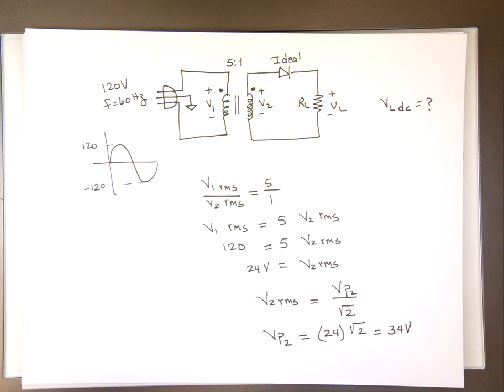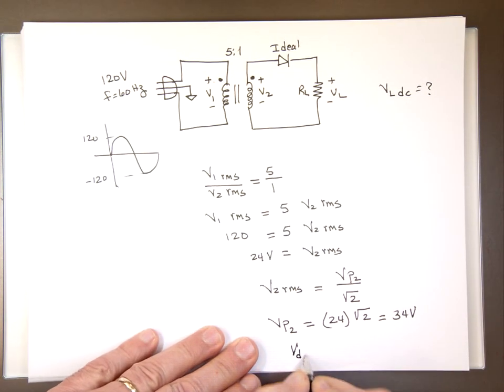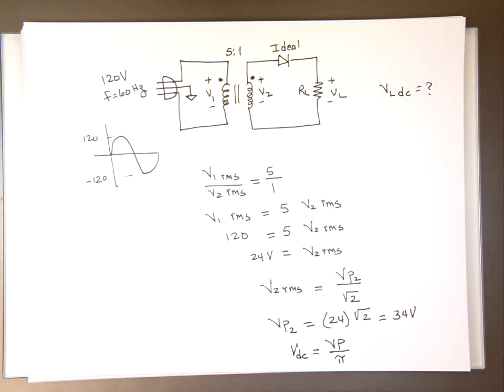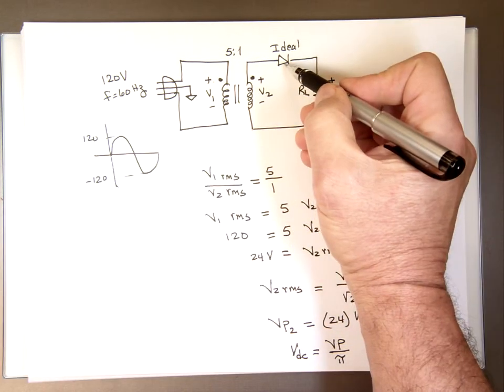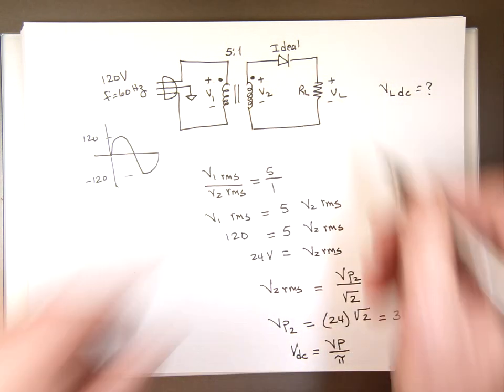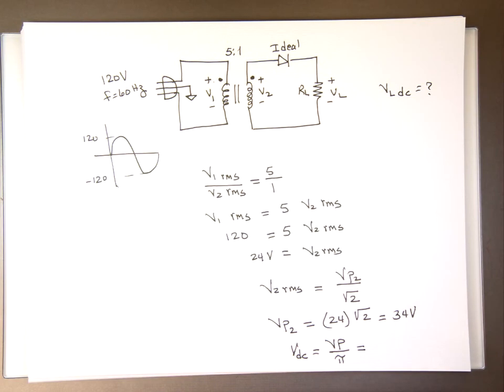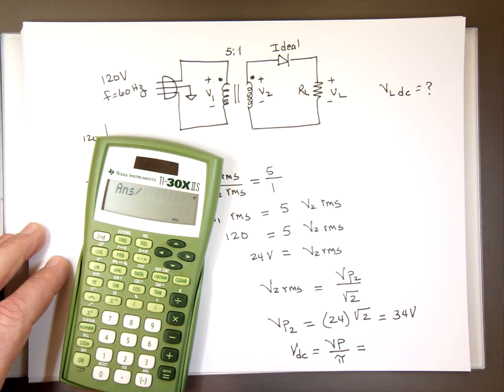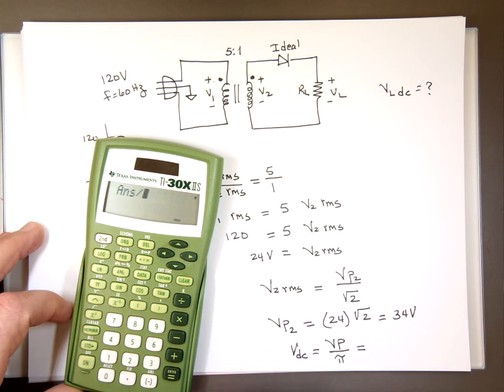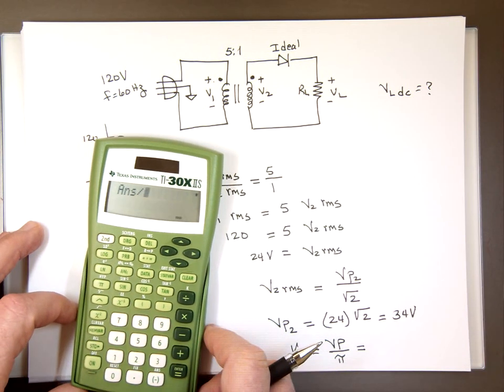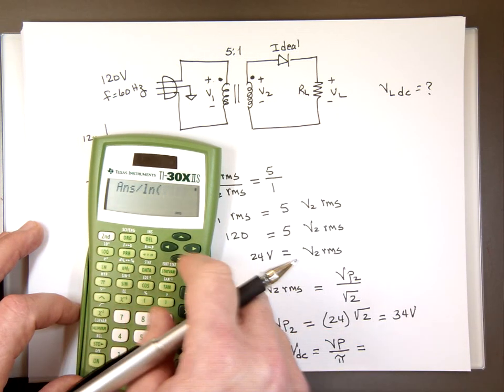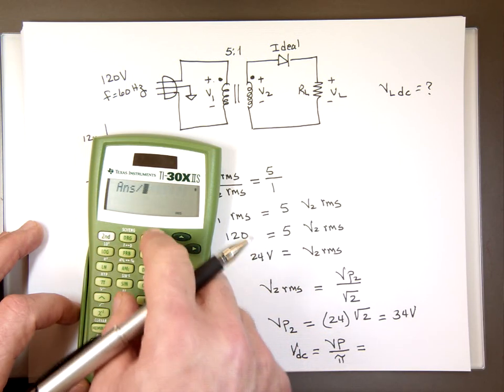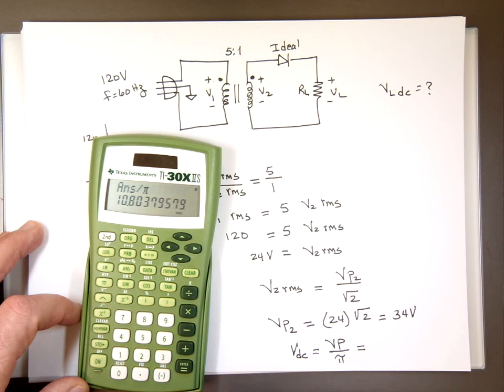So what is my VDC value? It's V peak over pi if you assume it's ideal. Because if it's ideal, the voltage drop here is zero, so this is in parallel with this. So you're getting a voltage here of 34 divided by pi. That's 10.8 volts.